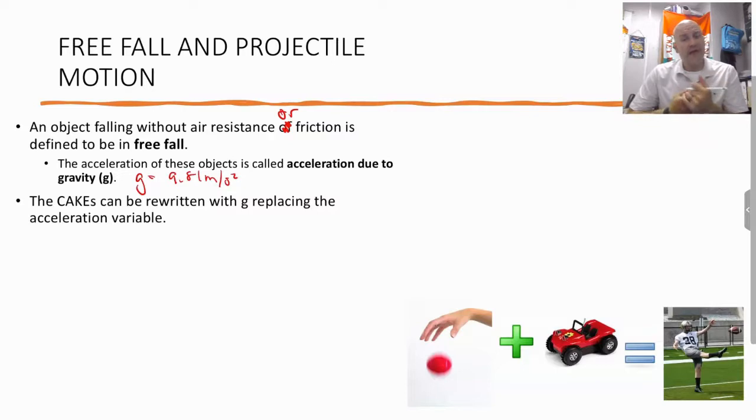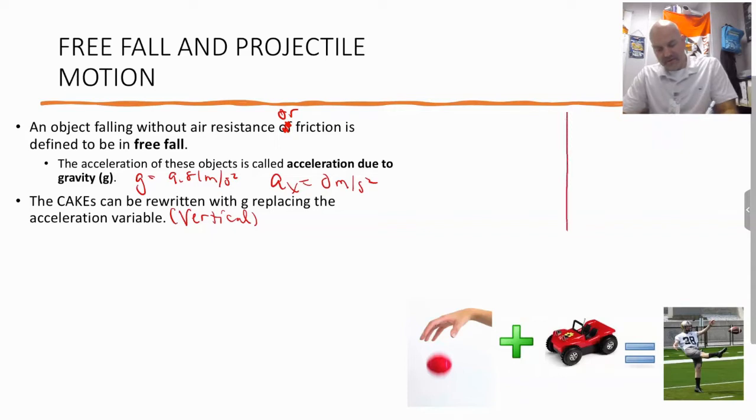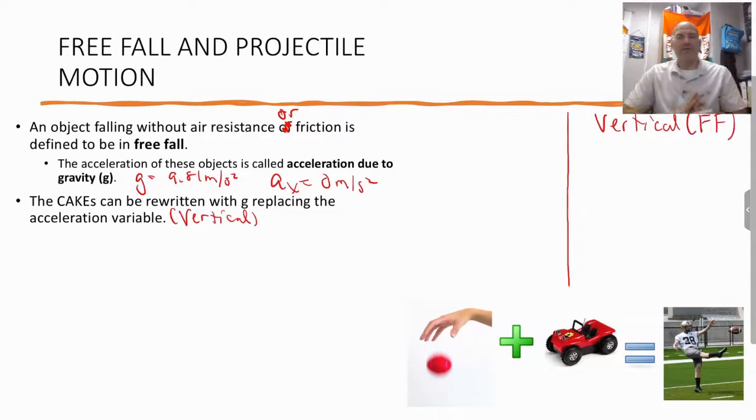Now, what we can do is the cakes, those equations we talked about in the last video, can be rewritten with the g replacing the acceleration variable. This is only in the vertical direction because there is no acceleration in the x direction. So the way we think about this, we can split up our equations. We're going to rewrite them with all of our new ideas of g and a, but for the vertical motion of projectile motion, we have free fall. So I can take those cake equations